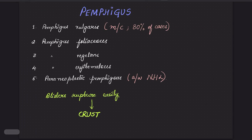Now I will study the pemphigus group — pemphigus disorders. Under pemphigus disorders, we have the vulgaris variety, foliaceus, vegetans, erythematosus, and also paraneoplastic pemphigus, meaning any internal malignancy manifesting as skin disease. Most commonly it is associated with non-Hodgkin's lymphoma. All these pemphigus disorders have superficially located blisters because these are intra-epidermal splits, and hence the overlying skin ruptures off easily, leading to crust formation.